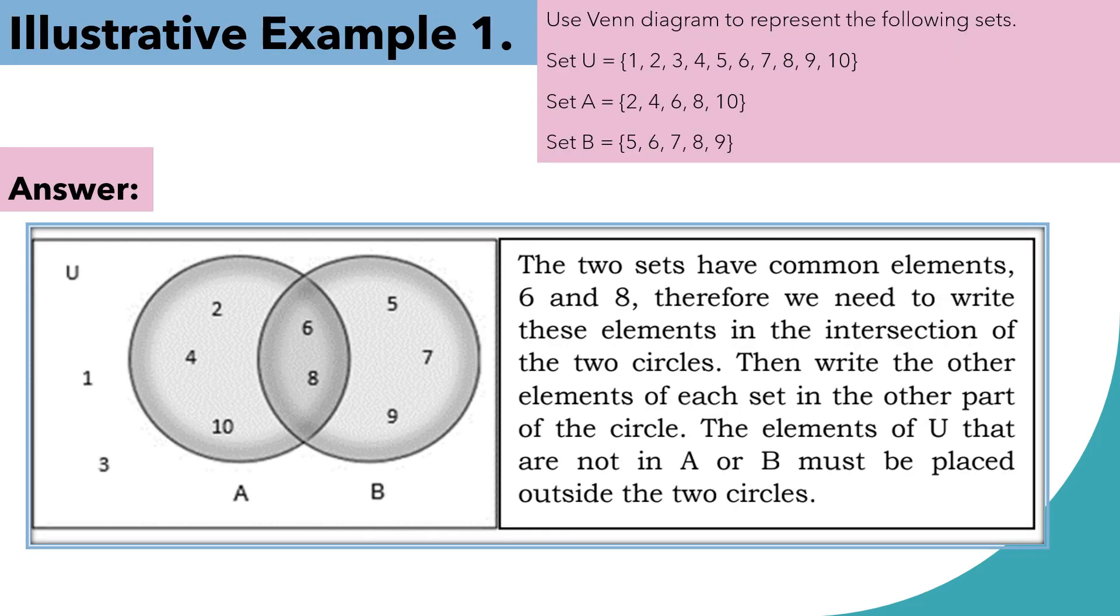So, this is the answer for illustrative example number 1. Take a look at the Venn Diagram. The two sets of common elements, 6 and 8. Therefore, we need to write these elements in the intersection of the two circles, in the middle part. Then write the other elements of each set in the other part of the circle. Do not forget to name the circle first. The elements of U that are not in A or B must be placed outside the two circles, because they are under the universal set, or set U.